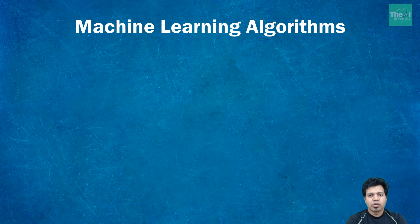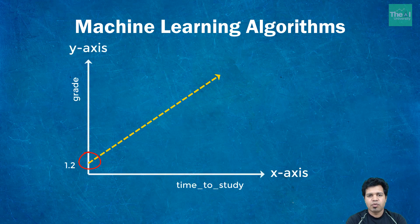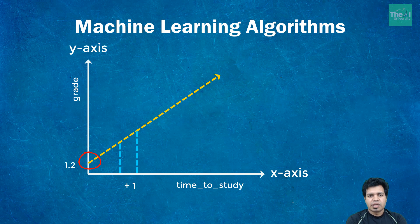Meaning the steeper the line, the more grades student will get per extra time to study. So let's take an example here. So let's say a student increased his time to study by one hour. So if we draw the line depicting this additional time of study and project it on y-axis, then we can infer that the grade of a student might be increased by 0.5.